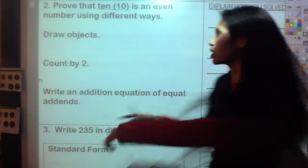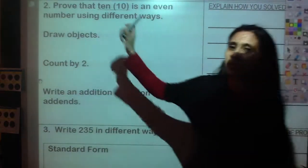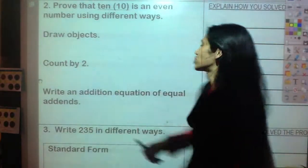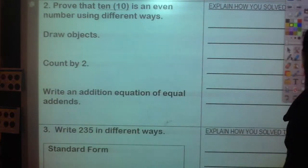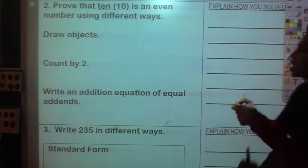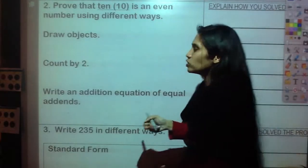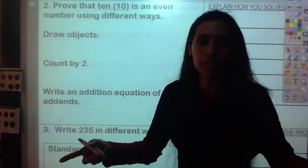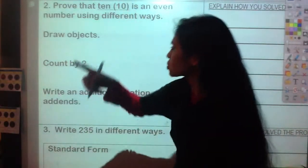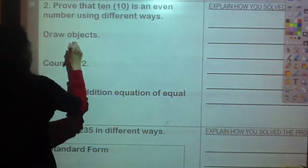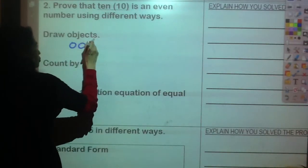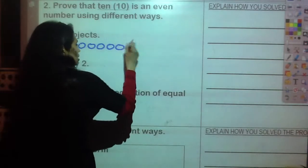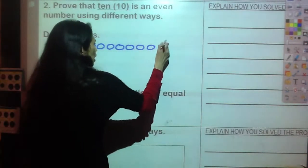We are working on number two. First, I'm going to draw objects. How many objects do I need to draw? Ten objects. You can pick any picture you want, but I'm just going to draw some circles. I need ten circles. Count with me: one, two, three, four, five, six, seven, eight, nine, and ten.